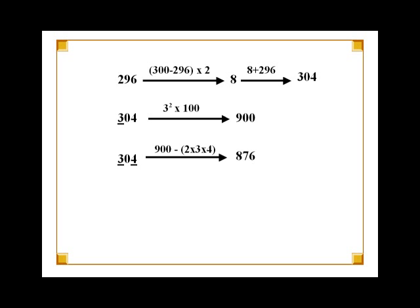For the third step, we multiply all non-zero digits in 304 and the number 2. In 304, the non-zero digits are 3 and 4. So, multiplying 3 with 4 gives us 12 and multiplying 12 with 2 gives us 24. Now subtract 24 from 900 to get 876.